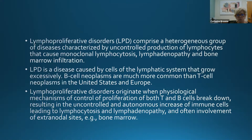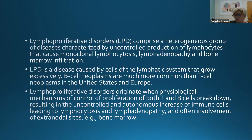CLL is generally rare in patients under 40 years old, with incidence increasing with age. Often patients present with advanced disease — lymphadenopathy and hepatosplenomegaly — because they've been asymptomatic. Peripheral blood is invariably involved at some point in the clinical course with an absolute lymphocyte count greater than 5,000, and in the vast majority of patients, the bone marrow is also involved.